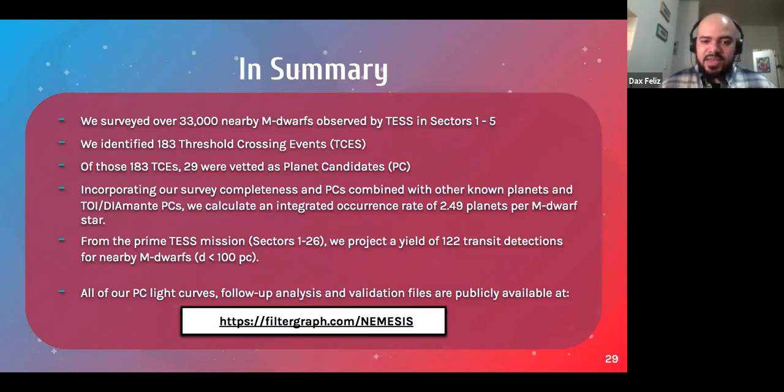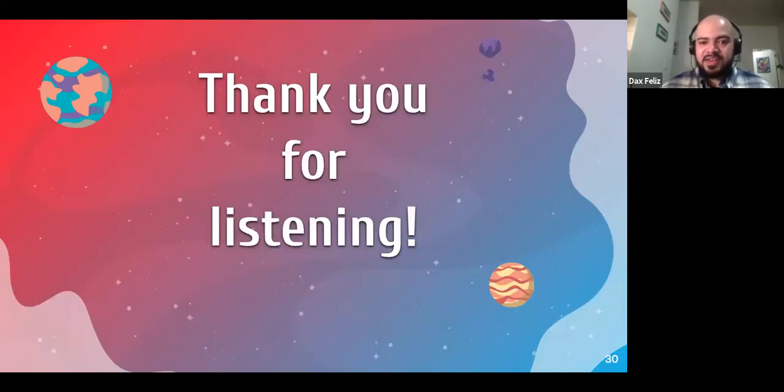And additionally, when looking at the prime mission as a whole from sectors one to 26, based on the 29 that we found, we project the total yield of 122 transit detections for nearby M dwarfs. So some of the numbers I spoke about earlier, there's about 84 nearby M dwarf planet candidates, and there are only 45 that are known. So we would almost more than double this amount with the projected yield that we expect to produce. And lastly, all of our light curves, our follow-up analysis and validation files are all publicly available at filtergraph.com slash nemesis. And I thank you all for listening to the science that my team and I have done. I really appreciate the opportunity to share this with you. And I'll be glad to take any questions. Thank you.